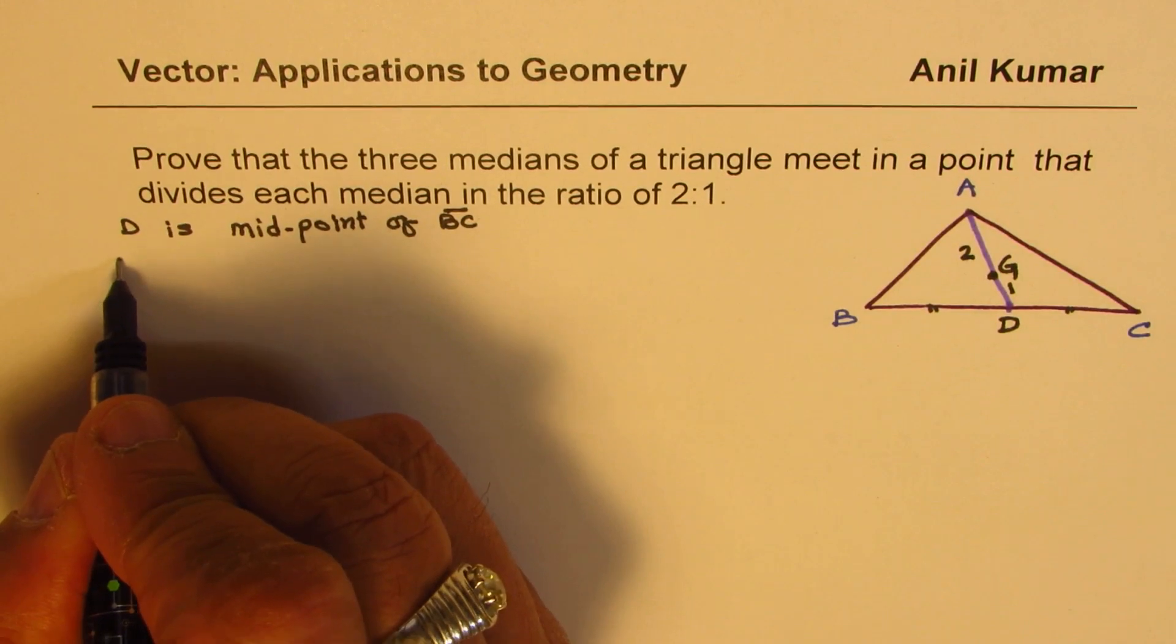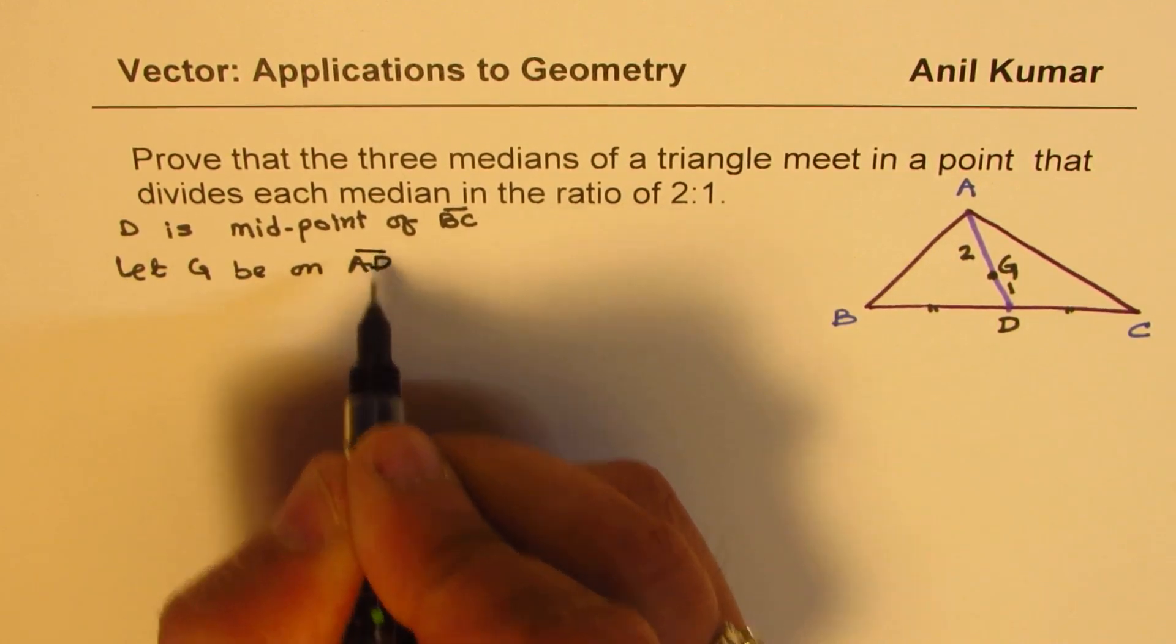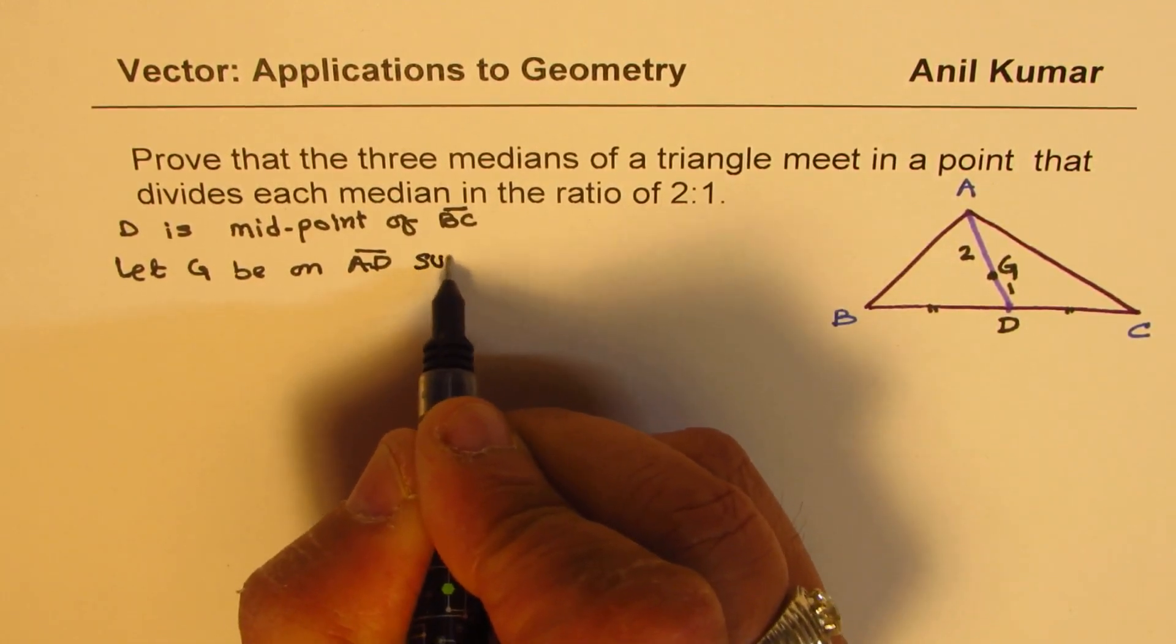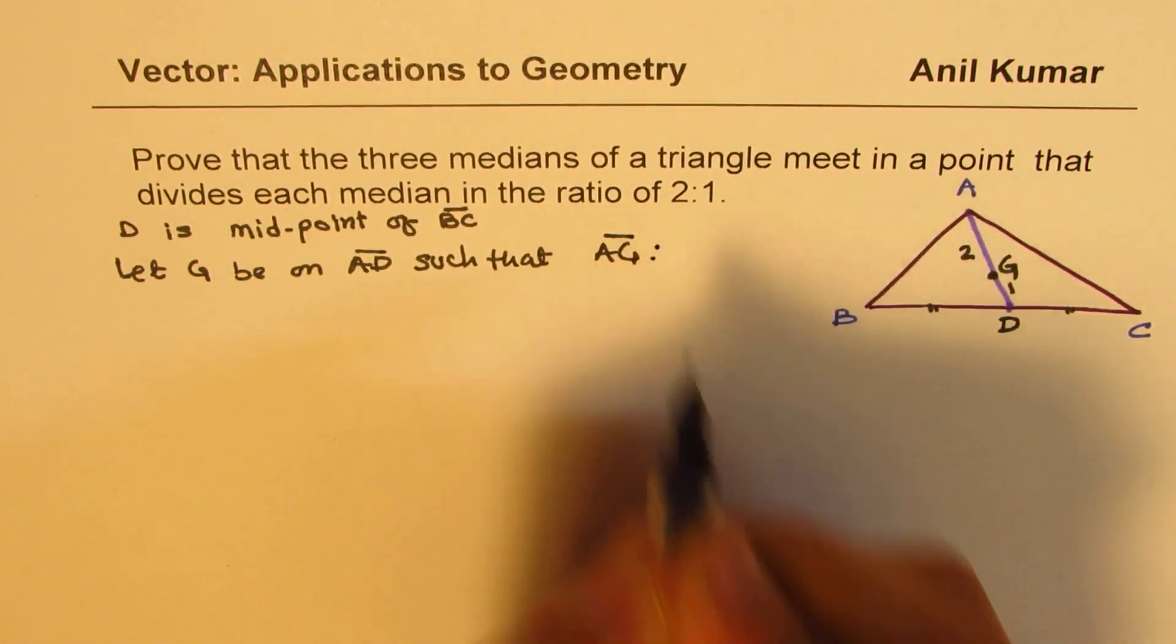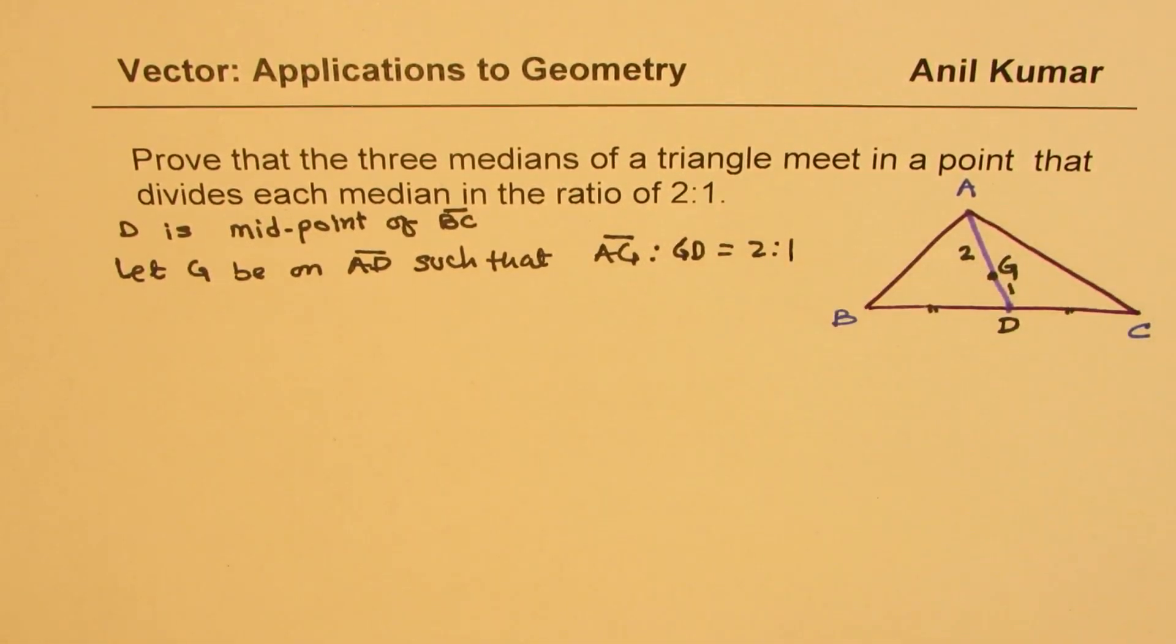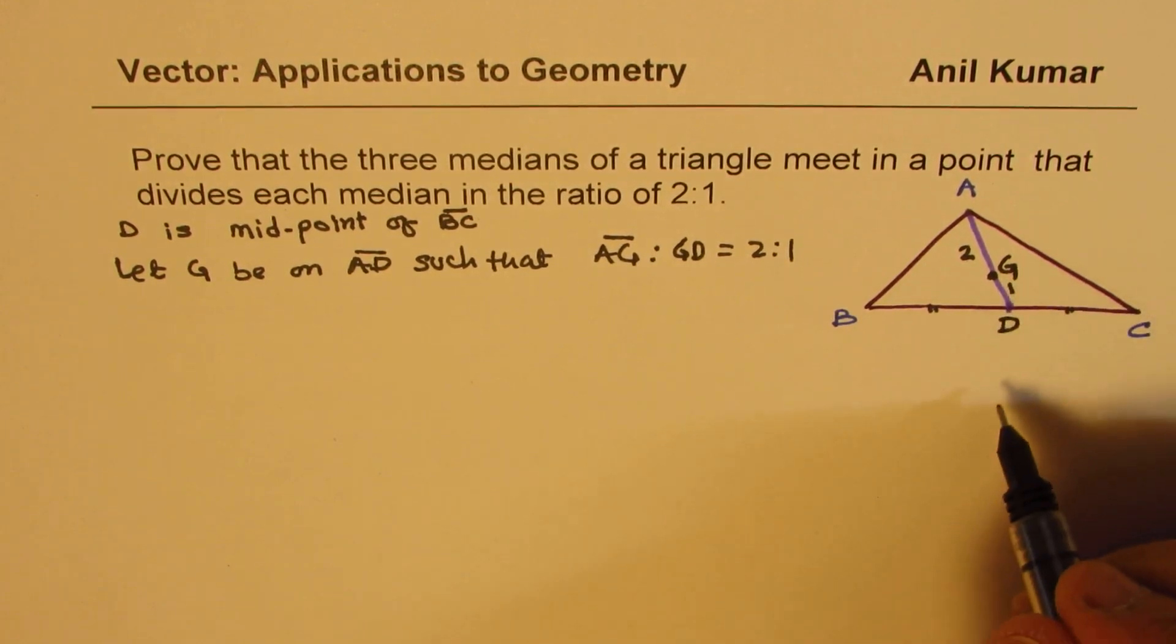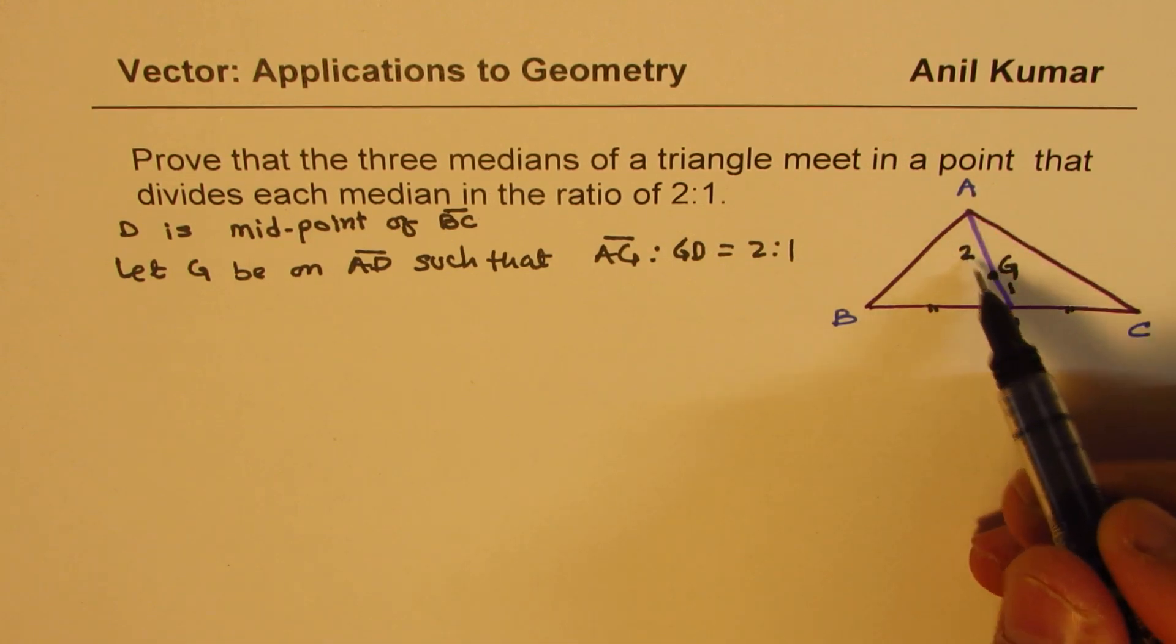Let G be on AD such that AG:GD = 2:1. I'm not saying this is the point where the medians intersect or this is the centroid, I'm just taking a point G. I'm joining A to the midpoint. On that median, AD is a median, we have a point G which divides AD in the ratio of 2:1.